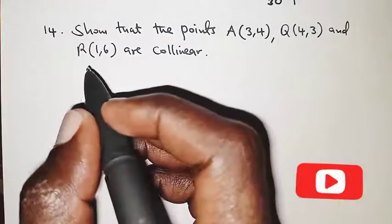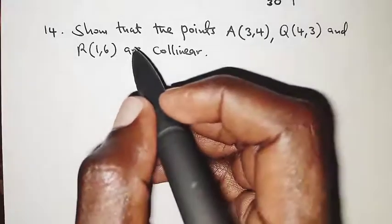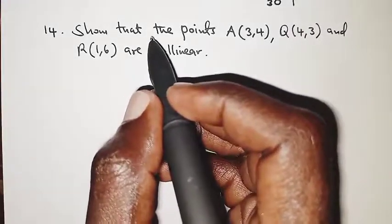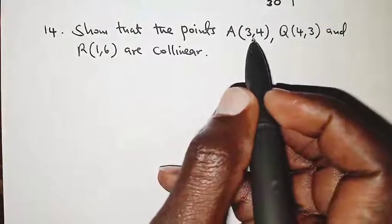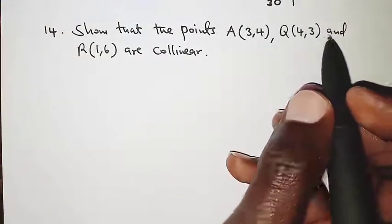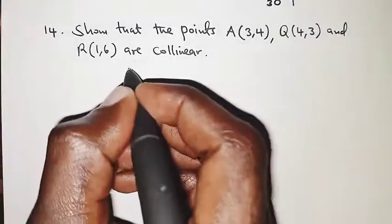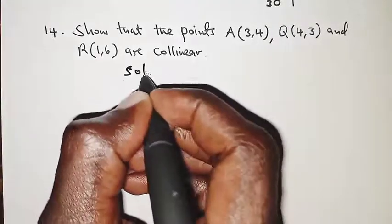Welcome. Today we are looking at question number 14, and the question reads: show that the points A(3,4), Q(4,3), and R(1,6) are collinear. So this is a question on vectors.